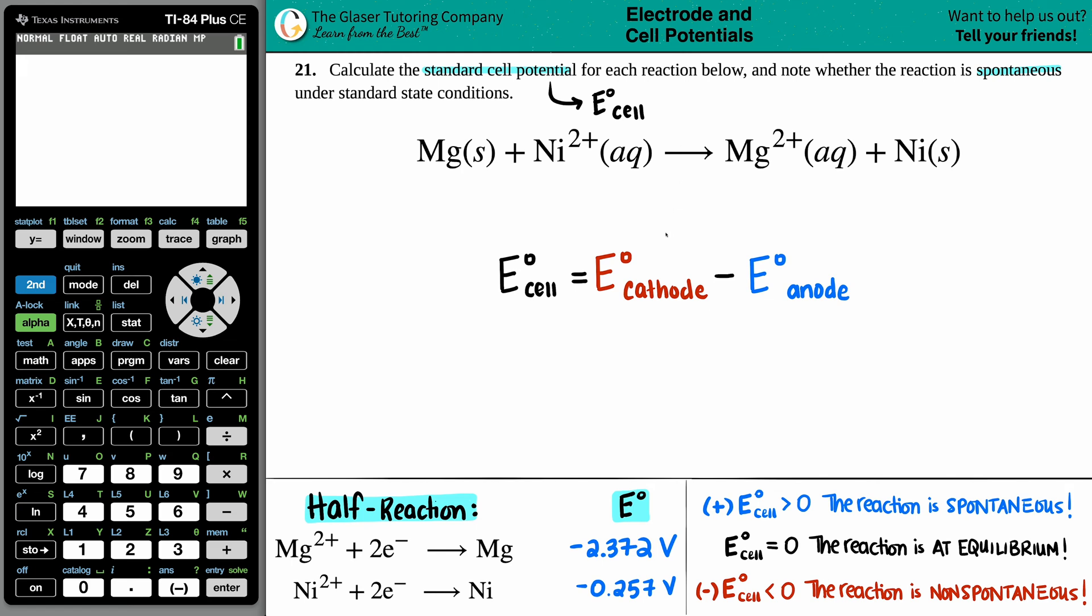Now remember that a cathode, you can always think of it as red cat. A cathode is where reduction happens. And at the anode, when we think of anox, anode is oxidation, especially in galvanic cells.